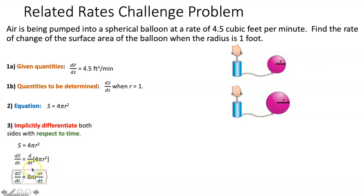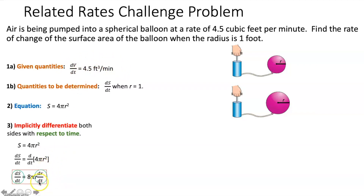Notice that in order to find dS/dt, we need to know both R and dR/dt. We already know R is going to equal 1, but we have no idea what dR/dt is — we were only given dV/dt. So we need to use that information to figure out what dR/dt is.